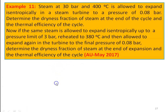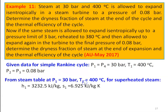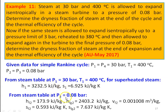Part 1 — Simple Rankine cycle. Given: P1 = P4 = 30 bar, T1 = 400°C, P2 = P3 = 0.08 bar. From the steam table at P1 = 30 bar and T1 = 400°C for superheated steam: H1 = 3232.5 kJ/kg, S1 = 6.925 kJ/kg·K. From steam table at P2 = 0.08 bar: Hf2 = 173.9 kJ/kg, Hfg2 = 2403.2 kJ/kg, Vf2 = 0.001008 m³/kg, Sf2 = 0.593 kJ/kg·K, Sfg2 = 7.637 kJ/kg·K.